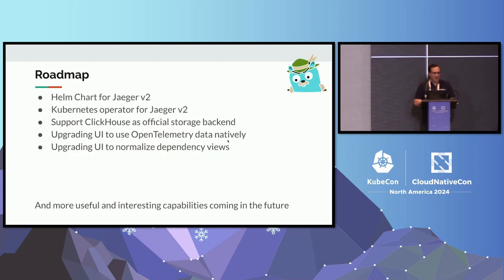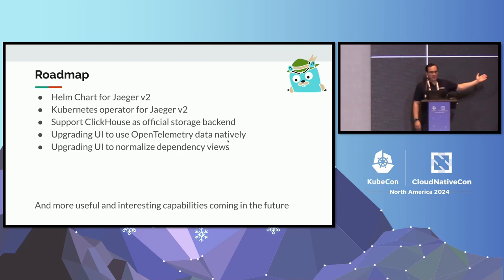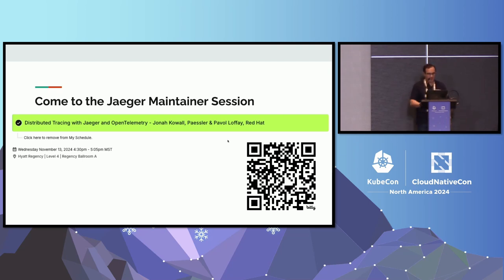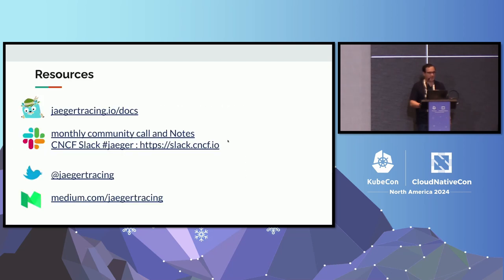We have a Helm chart for version 1 of Jaeger and we're working on one for v2 — this is one of our internship programs wrapping up this year. Same with the operator. We're adding ClickHouse and making a bunch of other changes to the UI, so we're looking for folks who want to work on the front-end — definitely come and talk to us. We also have a booth in the pavilion in the morning, and a session tomorrow afternoon. Please come to the community Slack and all the usual suspects. I hope you all have a wonderful conference.